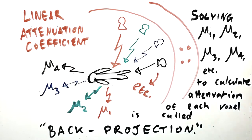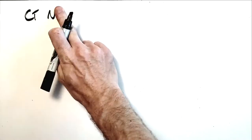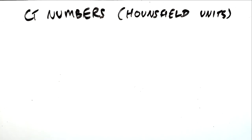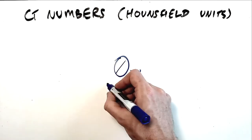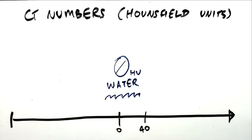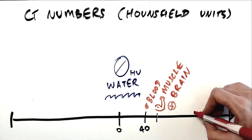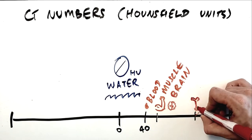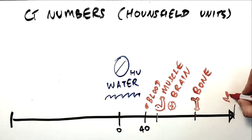Rather than constantly thinking and processing data in terms of complex linear attenuation coefficients, in CT scanning we use a simpler measure called the CT number expressed in Hounsfield units. The CT number is a measure of the radiographic density of a voxel described with reference to the density of water. This means that the CT number of water is zero Hounsfield units.